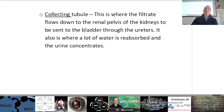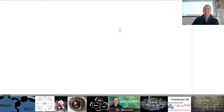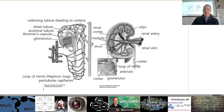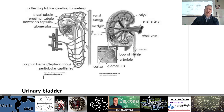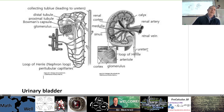The collecting tubule is where the filtrate flows down to the renal pelvis of the kidneys to be sent to the bladder through the ureters. It's also where a lot of water is reabsorbed and the urine concentrates. Looking at the diagram in your notes: the glomerulus, Bowman's capsule surrounding it, the proximal tube as the first bit, then Henle's loop, back up to the distal part, and the collecting tube is that big long tree-like structure. Focus on the terms in the notes for studying.